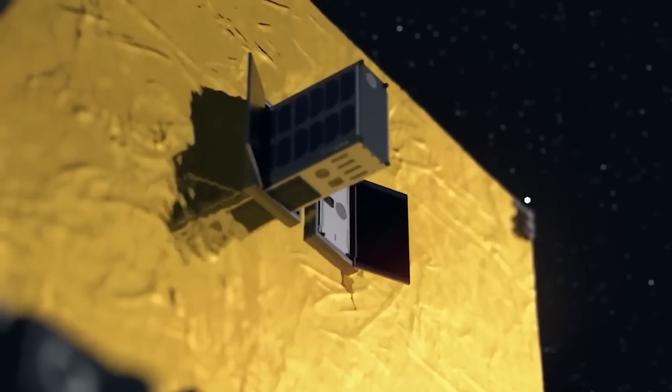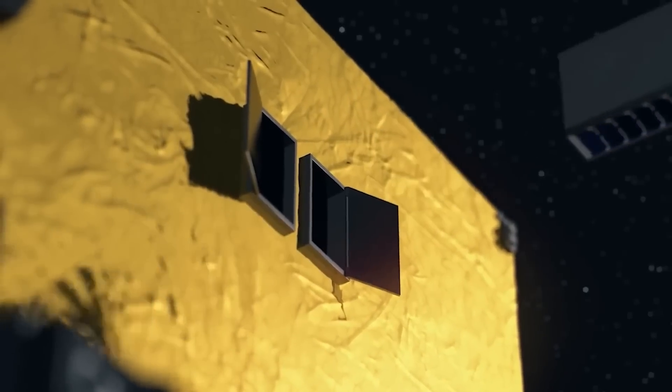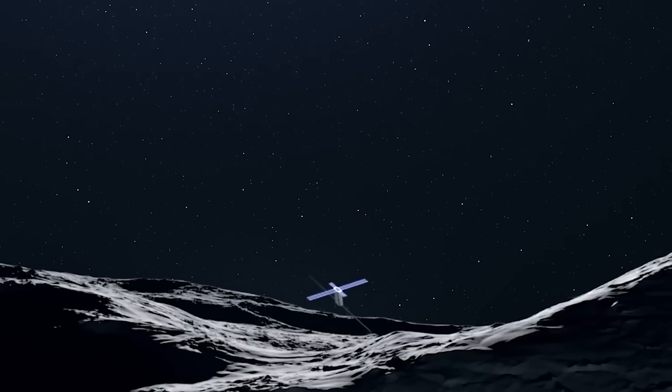The experiment was successful because the hit greatly shortened Dimorphos's orbit around its parent asteroid, Didymos.